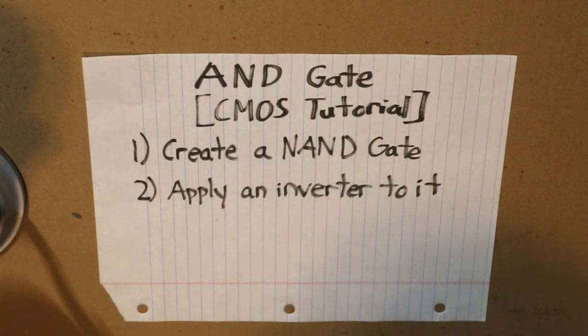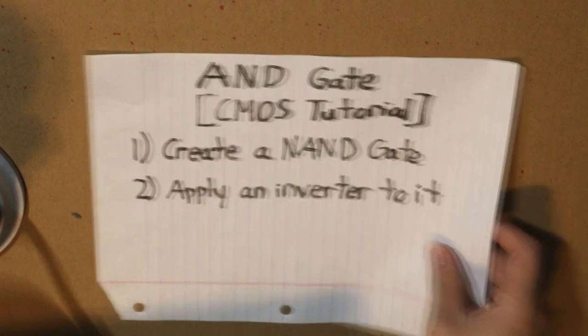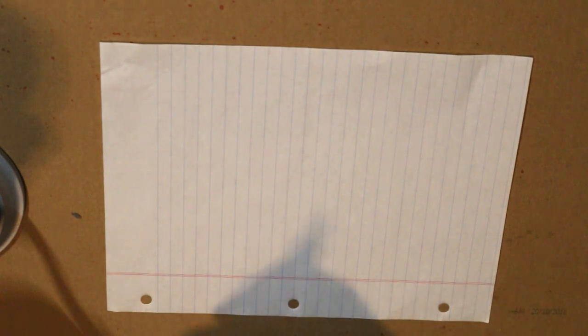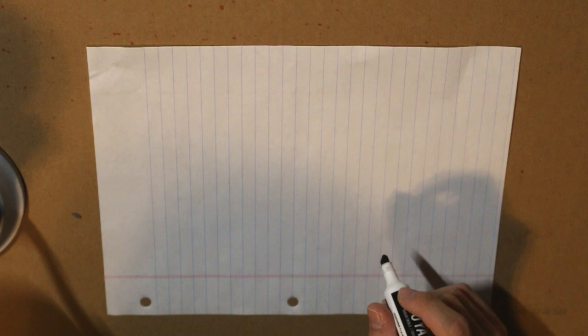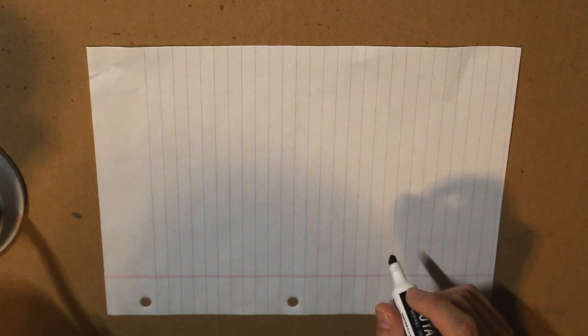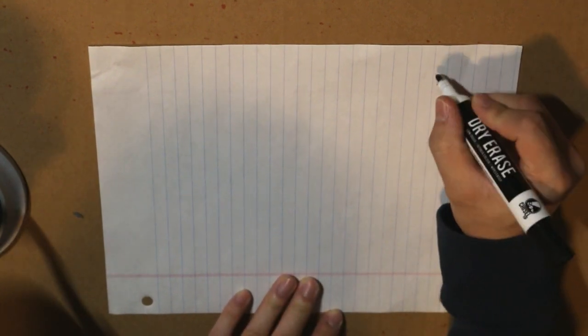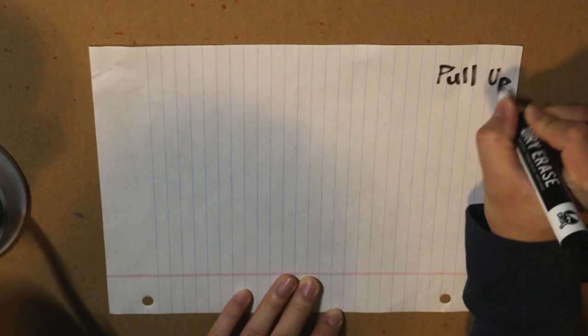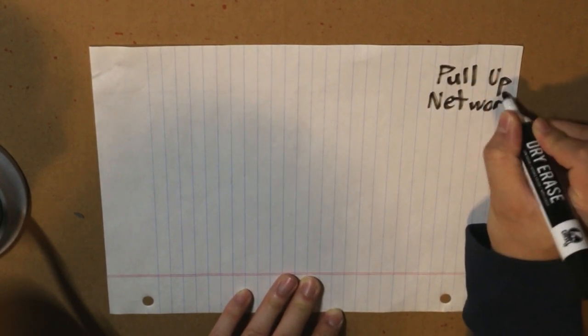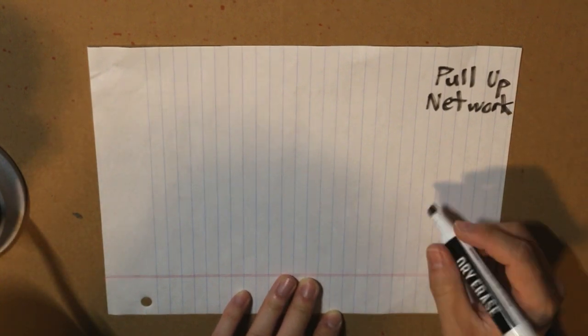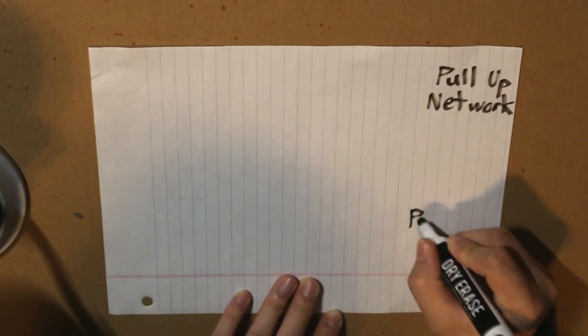Let's do that, shall we? Let's do step one first. As we know, when it comes to creating a CMOS, we have to identify our two networks. Our first network is our pull-up network, then below is our pull-down network.